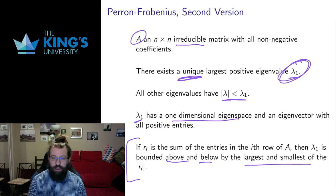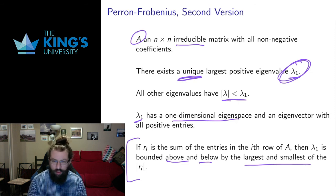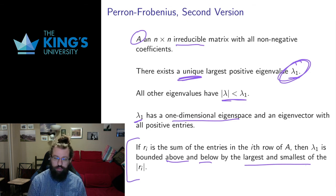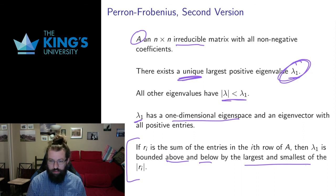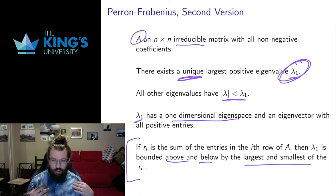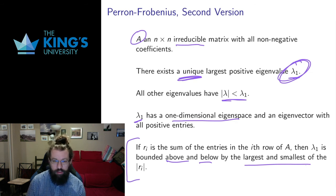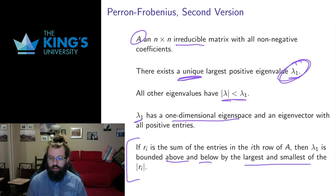This video has been fairly abstract — we've discussed theorems for analyzing dynamical systems without seeing what the systems actually look like or what the states mean. In the next video, we'll look at more concrete examples with an actual system where the states have real meaning.